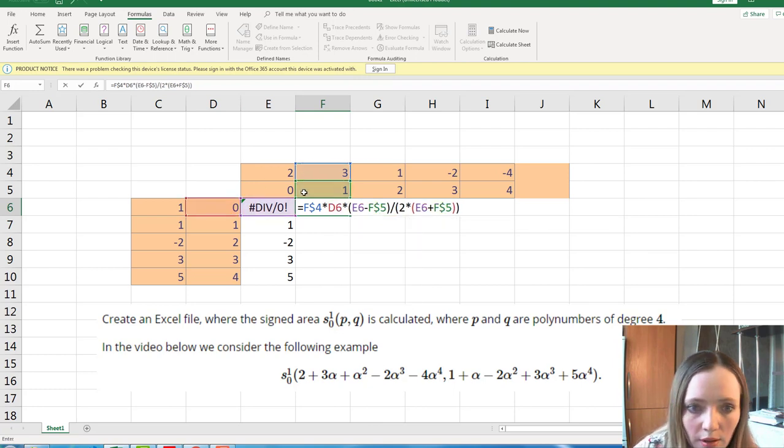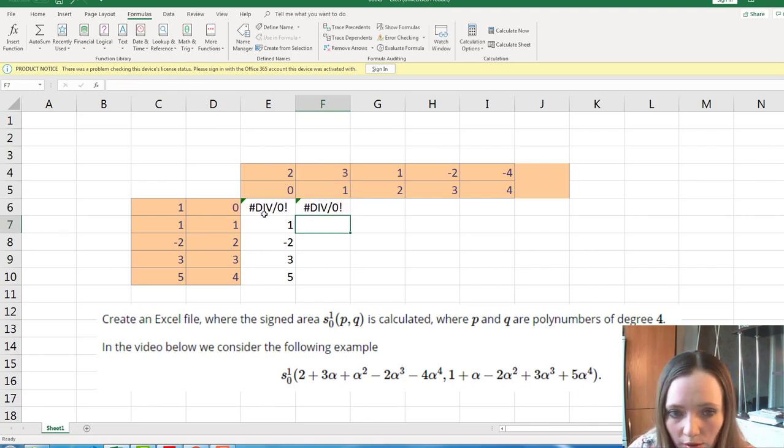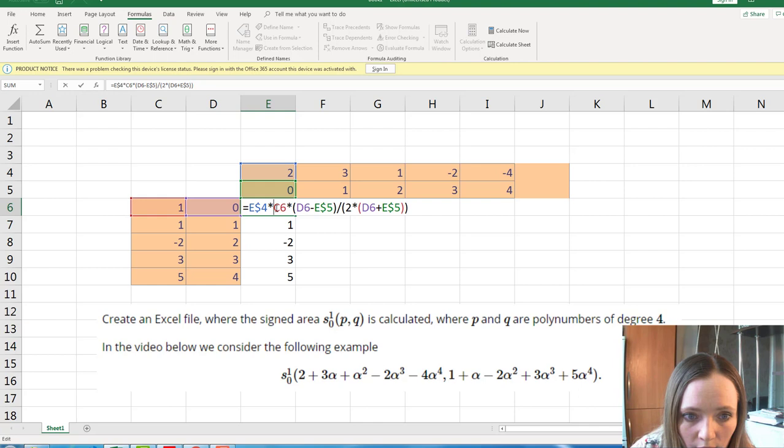We must have this cell and this cell. But Excel use f4 times d6. F4 is okay. But d6 is wrong, right? We need c6. So we don't have to change this d. So we tell Excel, please do not change this c. And similarly here, please do not change this d.